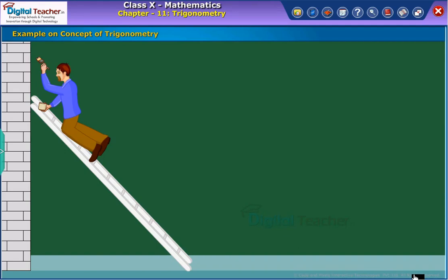Denoting the foot of the ladder by A, top by C, and base of the wall by B. Hence, there is formation of a right angle triangle with the right angle at B, and theta is the angle subtended by the ladder and the base.